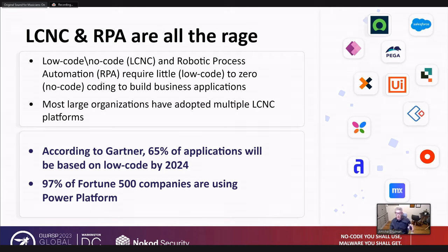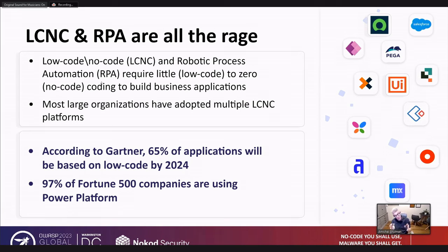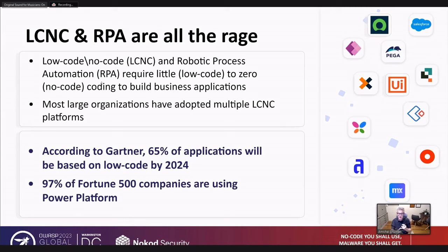You might recall the CASE tools of the early 2000s, or application generators like Magic, Microsoft Access, and 4GLs from database providers like Informix or Oracle — and they're all gone by now. So why should we bother with this new trend of low-code, no-code? Well, Gartner predicts that by next year, most of the applications written by enterprises are going to be based on low-code, no-code platforms. Almost all Fortune 500 companies are already embracing this technology for the past three to five years, so there's a lot of investment here — and quite frankly, there are a lot of circumstantial reasons why this time it is here to stay.